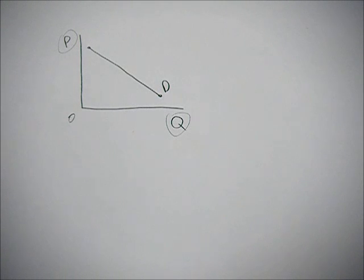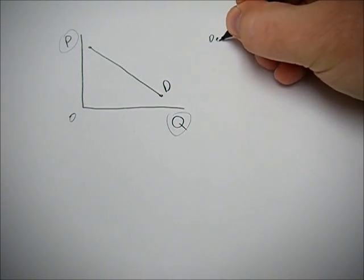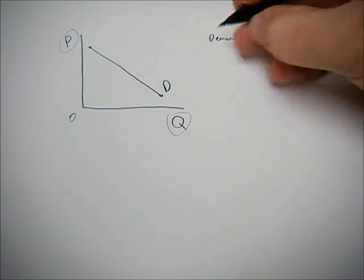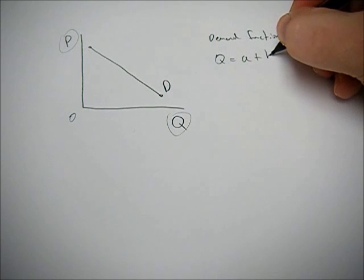And that's kind of the complicated thing with economics. But I'm going to tell you why we don't know. First, a demand function can be written as Q equals A plus BP.